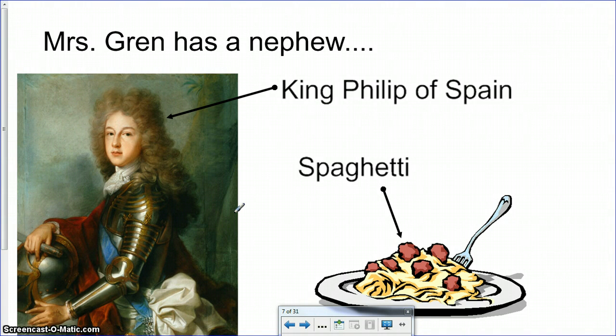So we finished talking about Mrs. Grin and how we can use Mrs. Grin as a mnemonic to help us remember the seven life processes. Now you're going to learn another mnemonic and it has to do with remembering the order that the taxa happen in. So I just used the illusion that Mrs. Grin has a nephew. His name is King Philip of Spain.